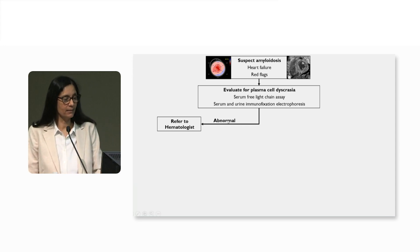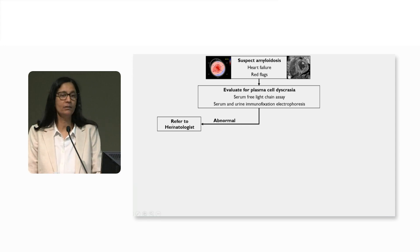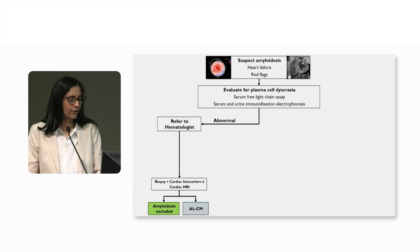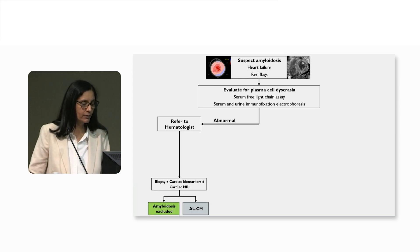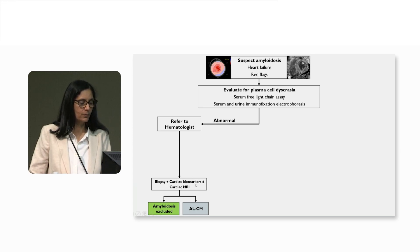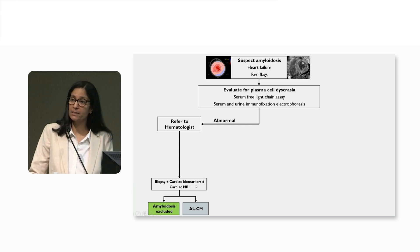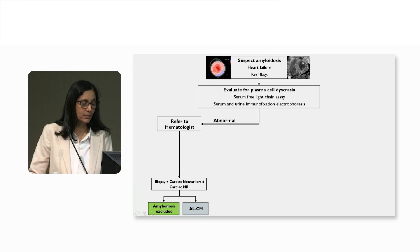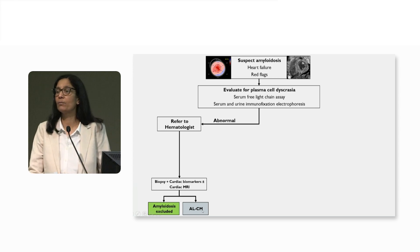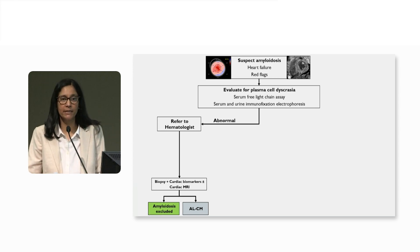If that testing is abnormal, then immediately refer the patient to a hematologist with amyloid expertise. They can follow up with biopsy — either involved organ or endomyocardial biopsy — cardiac biomarkers, and cardiac MRI may be considered at that point. Either amyloidosis is excluded or light chain amyloidosis is diagnosed and therapy is initiated quickly.